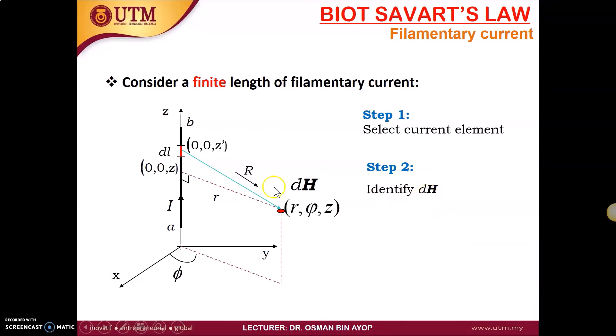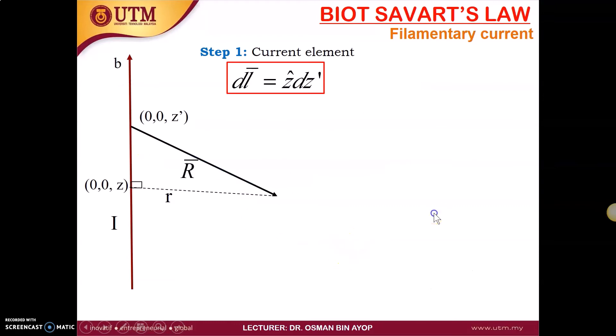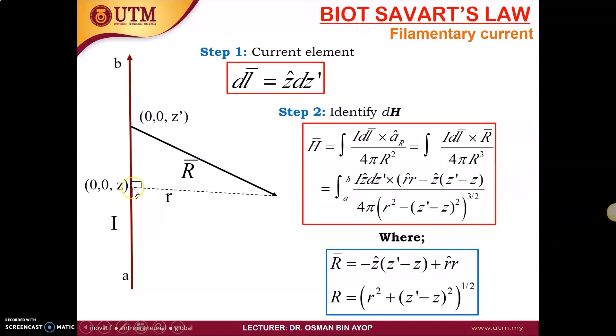So the Z prime is basically a variable and we have a Z. First, you have to set the current element. Step 1: current element. Step 2: identify dH, and integrate over the filamentary current length to get H. So the dL is basically the direction of Z and the variable is dZ prime.